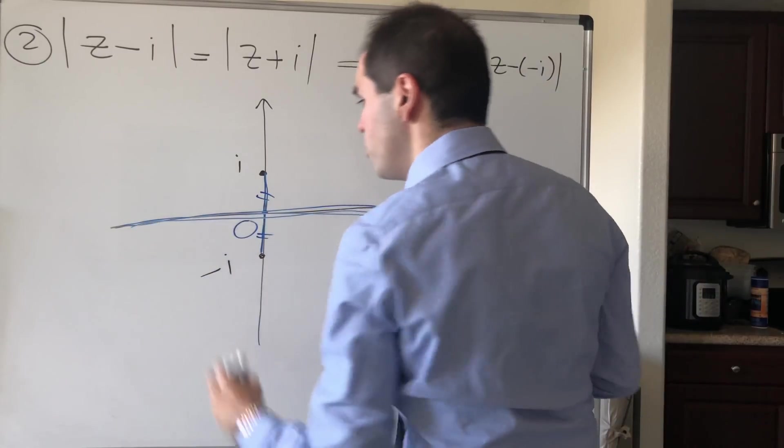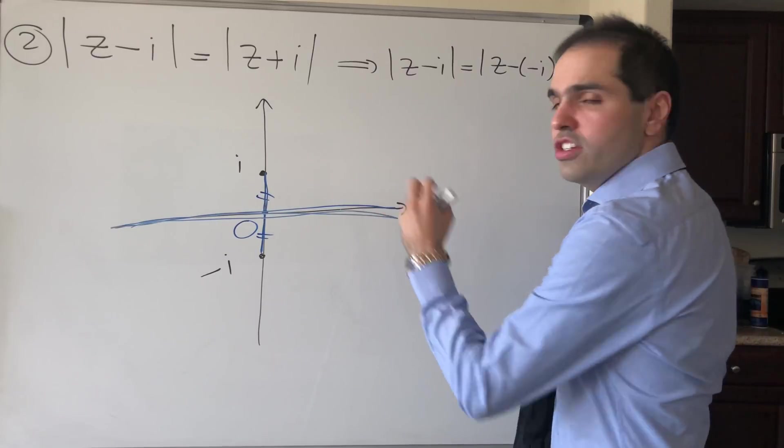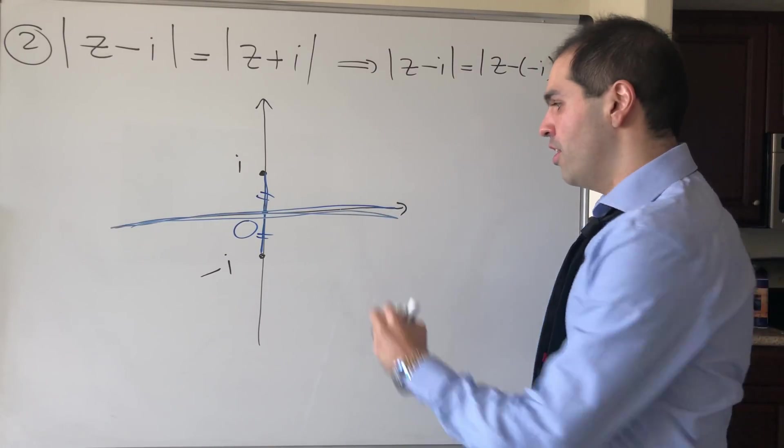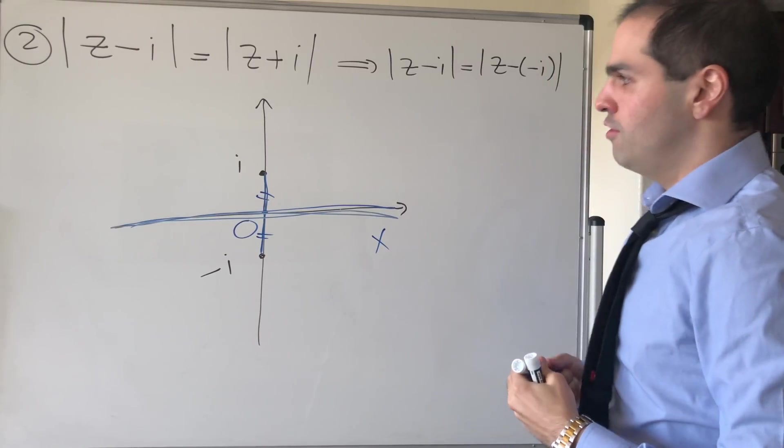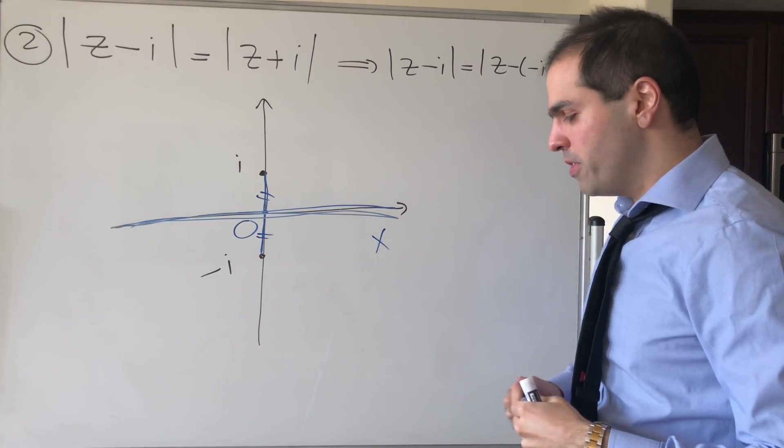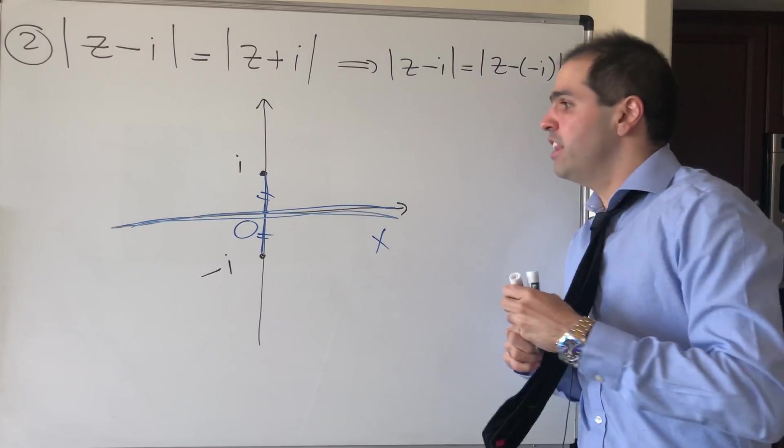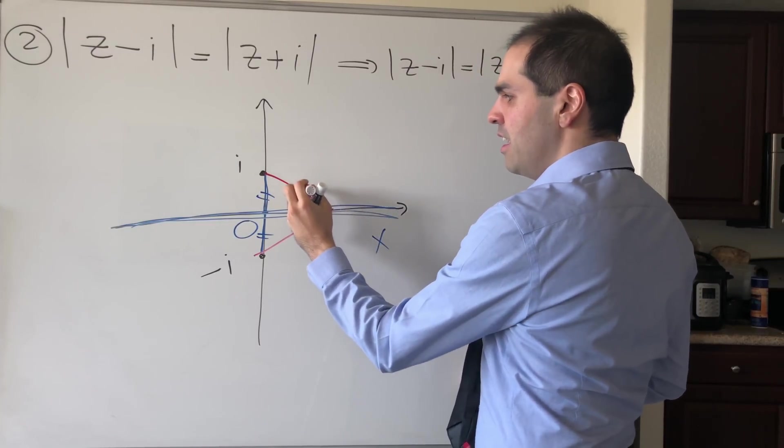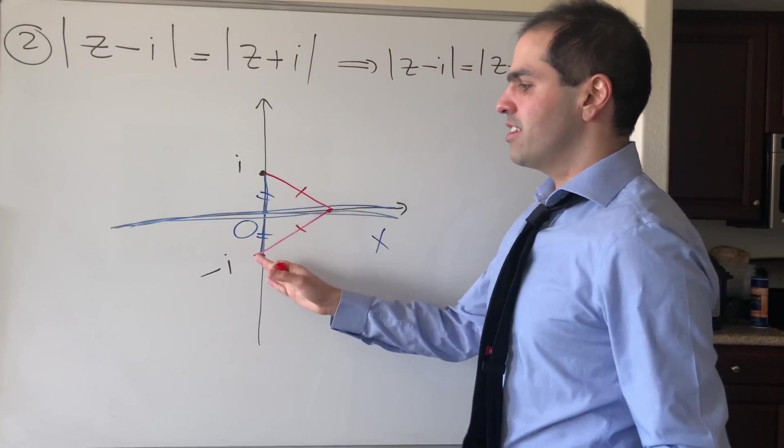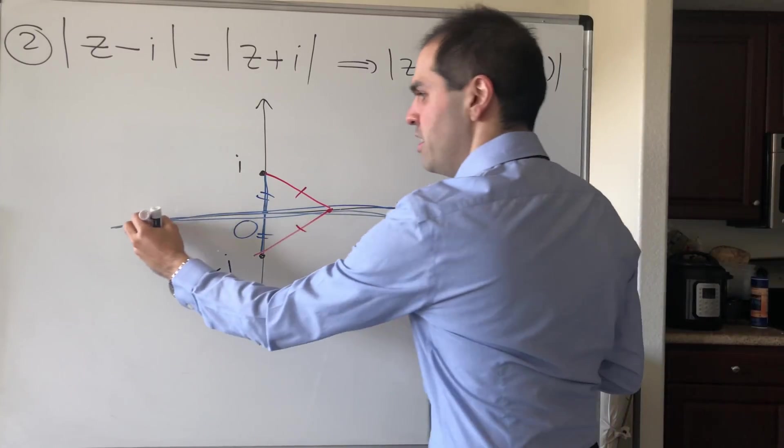And notice, interestingly here, that perpendicular bisector is just a real line. In other words, it's the set of all x, where x is real. And, in fact, then, again, by properties of the perpendicular bisector, you can actually verify that, indeed, any point on this line is the same distance away from i as it is from minus i, or, for example, even here.